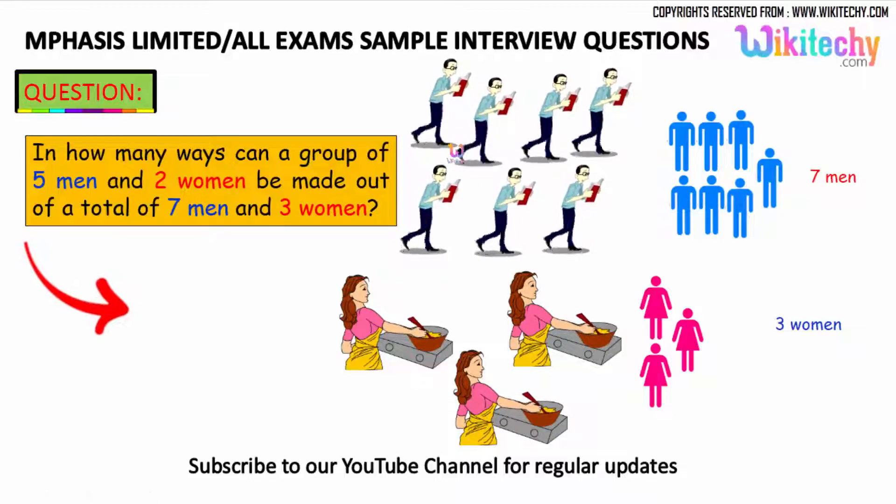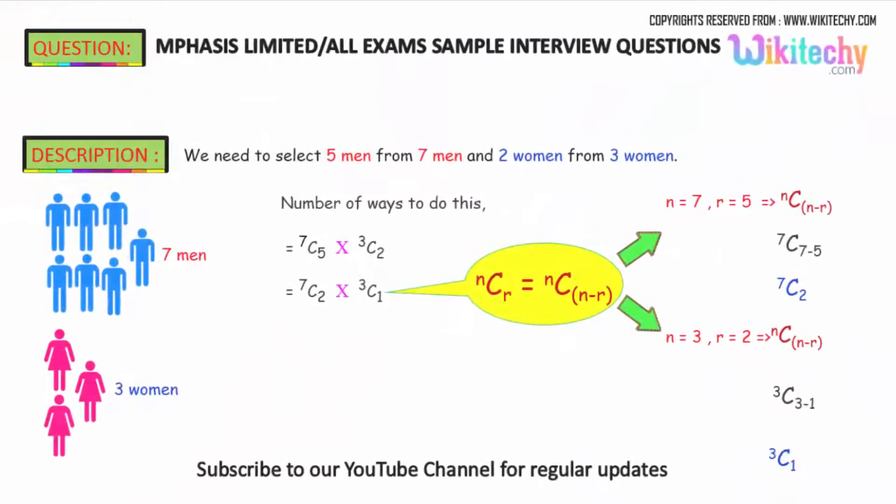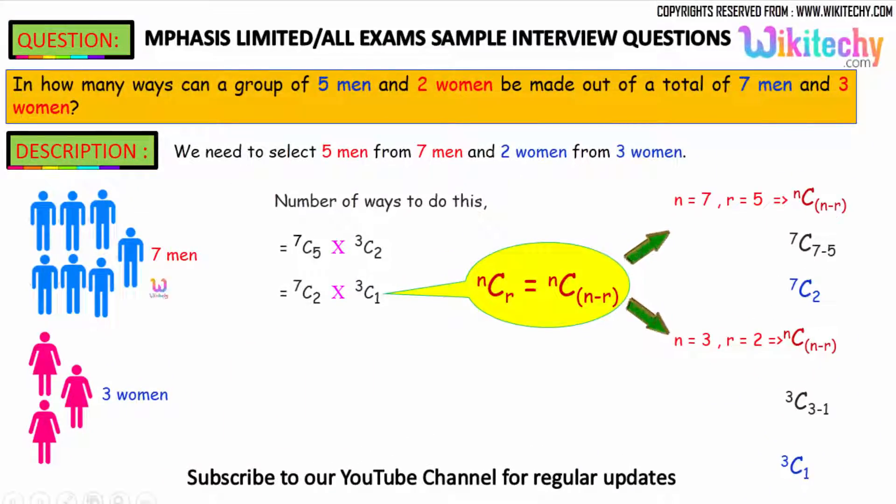In how many ways can we do this combination? It is coming under a permutation combination problem. We got 7 men and 5 men, we are trying to put a combination 7C5, and 3 women, we put a combination of 2, 3C2.